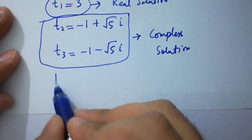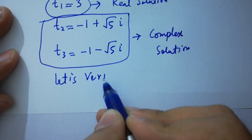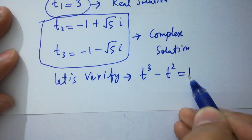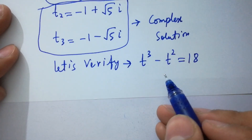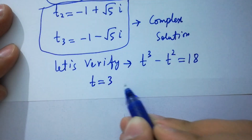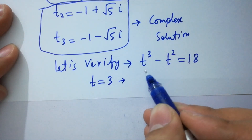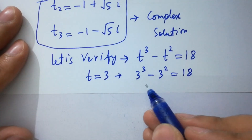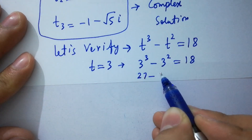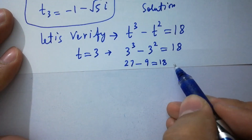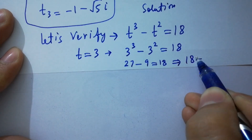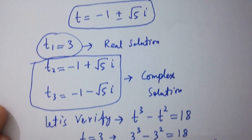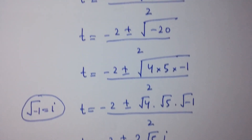Now let's verify. Substituting t equal to 3 into t cubed minus t squared equal to 18: 3 cubed minus 3 squared equals 27 minus 9 equals 18. So 18 equals 18, left-hand side equals right-hand side. Thanks for watching this video. Please subscribe to this channel to get notifications of new videos.